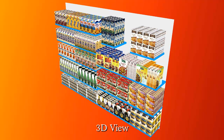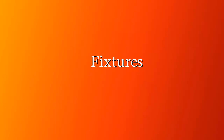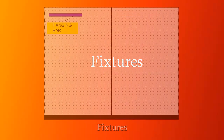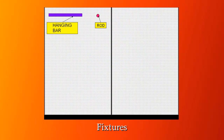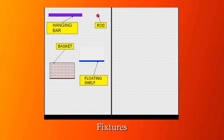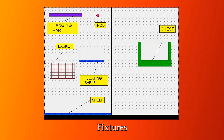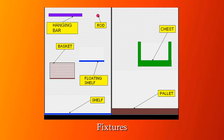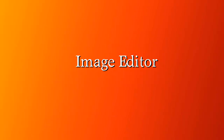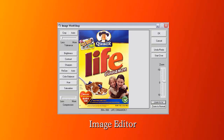You can rotate the plan to show it in any angle. The Enterprise Edition supports a variety of fixtures — there's hanging bars, rods, baskets, floating shelves, shelves, chests, and pallets.